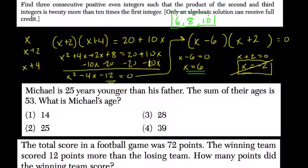We can test it out. They told us if we multiply 8 and 10, that equals 20 more than 10 times 6. Is that true? Yes. 8 times 10 is 80, and 10 times 6 is 60. Add 20 to 60 and you get 80. So this works.